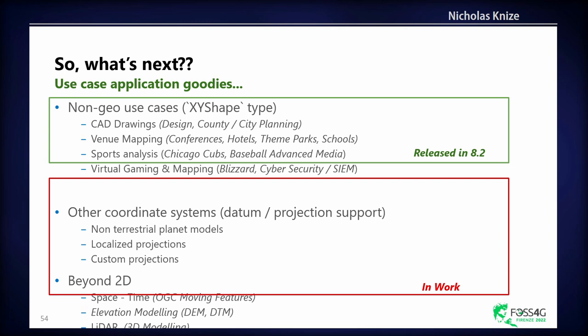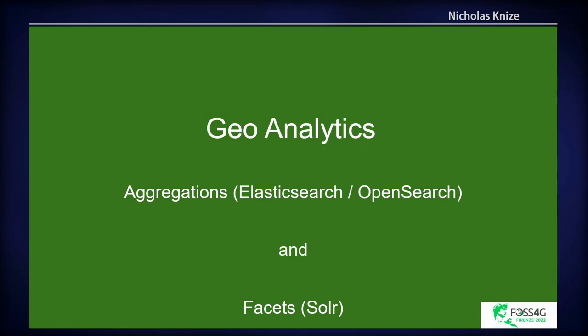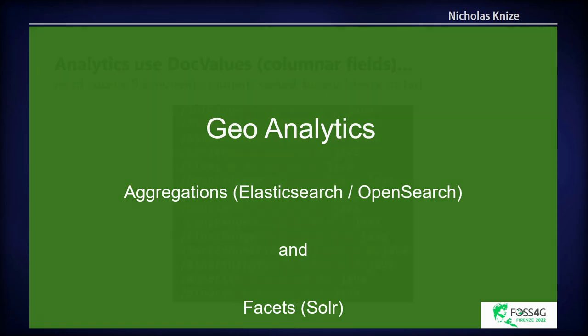Where are we going next? We actually already have XY shape for arbitrary XY Cartesian geometries. This is for internal mapping and non-worldly coordinates. Then we're going to other coordinate systems. I have very little time here, so I don't go into details on the aggregations, but I did want to show you what's new in 9.4.